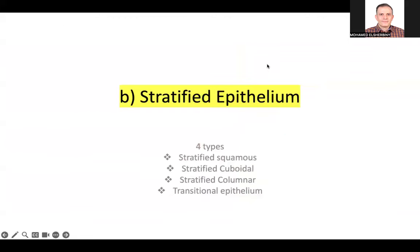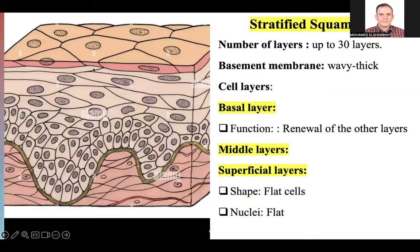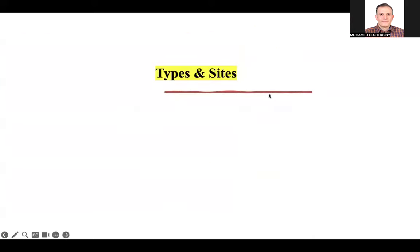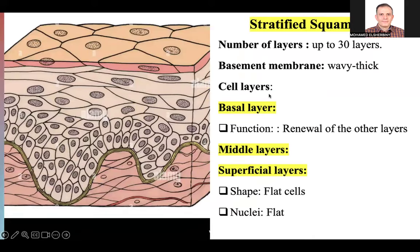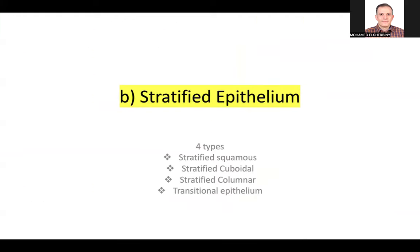To summarize simple epithelium: we divide it into simple squamous, simple cuboidal, simple columnar, and pseudostratified columnar.